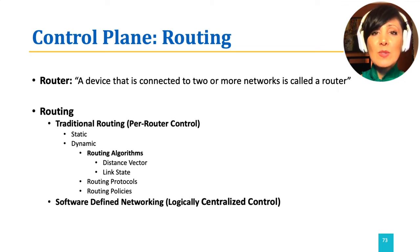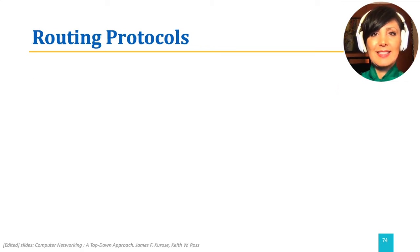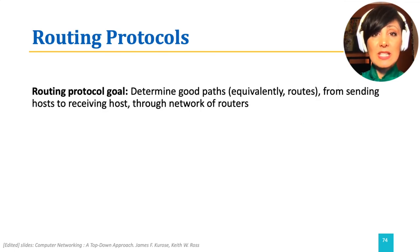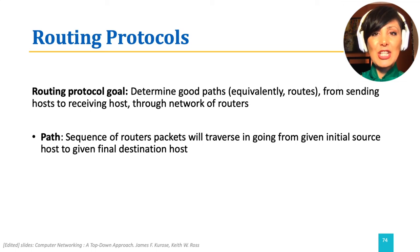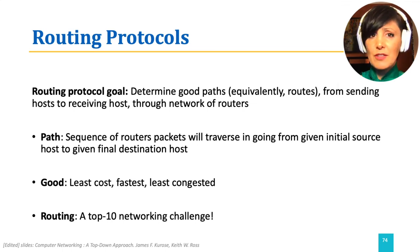We will first explore traditional routing by learning routing algorithms, then check how we use those algorithms in routing protocols and learn additional concepts like policies used in the definition of routing protocols. The goal of a routing protocol is determining the best path from the sending host to the receiving host. The sequence of routers that the packet traverses from source to destination is called a path. We want this path to be fast, inexpensive, and least congested — in other words, the shortest path with the lowest link costs and not very busy. This is not a trivial problem.